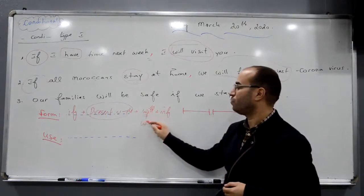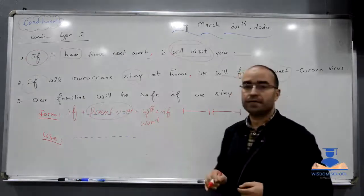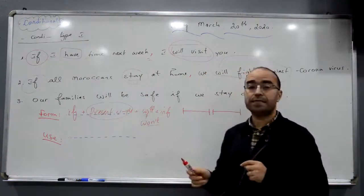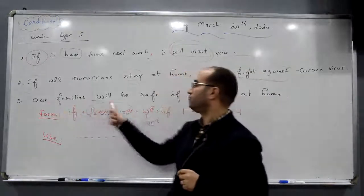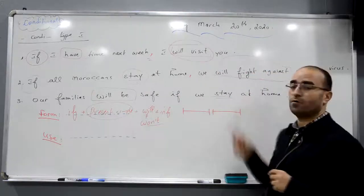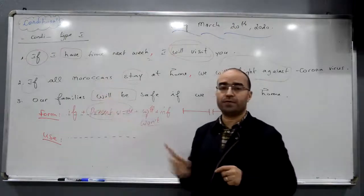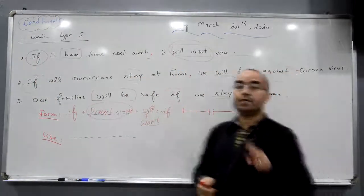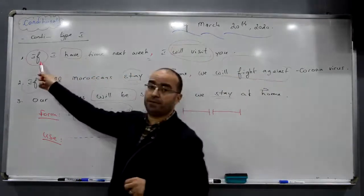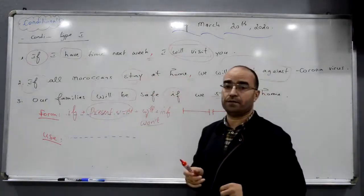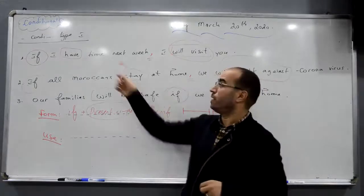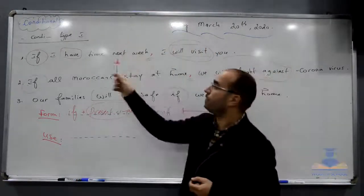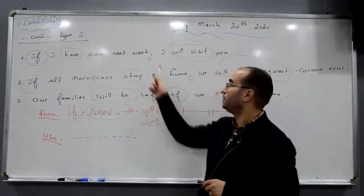For the negative form, it's 'won't' — with an apostrophe T. If you stay at home, you will be safe. Negative form: if you don't stay at home, you won't be safe. Third sentence: 'Our families will be safe if we stay at home.' What's the difference? For sentences one and two, we start with 'if'. For sentence three, we have 'if' in the middle. If 'if' is at the beginning, we have a comma in the middle. If 'if' is in the middle, there is no punctuation. So you can say 'If I have time next week, I will visit you' or 'I will visit you if I have time next week.' It's the same.